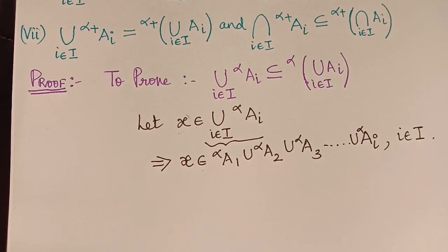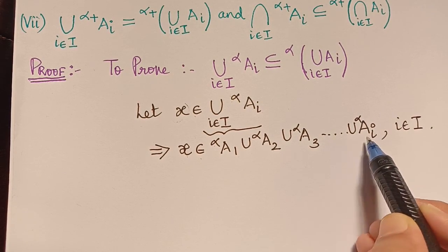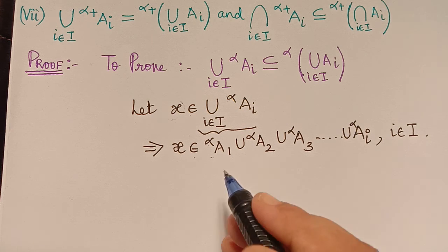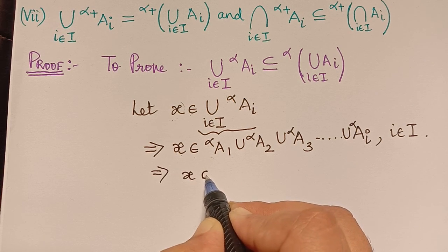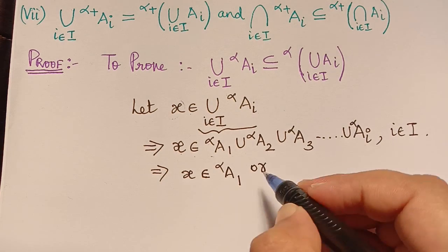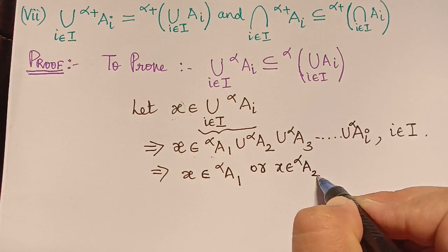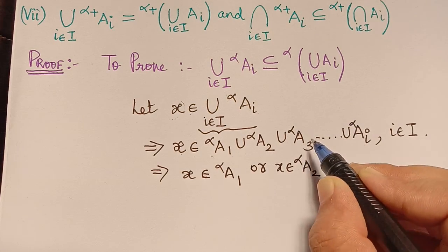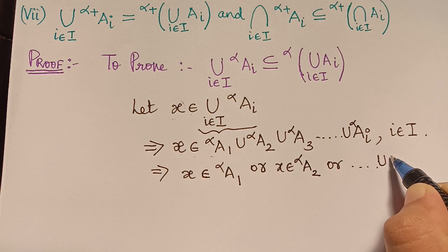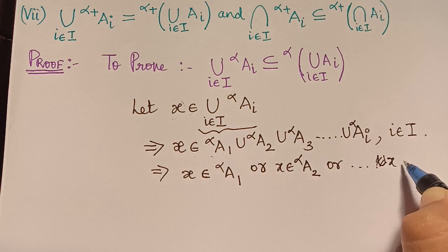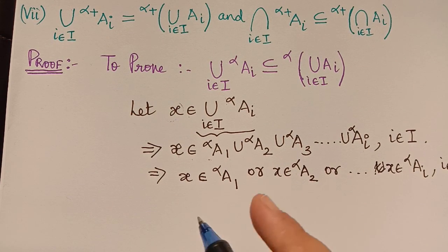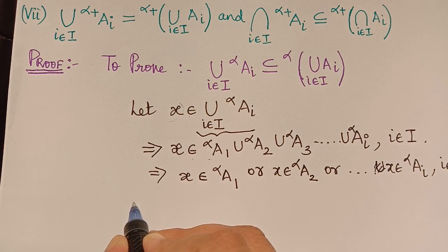Since x belongs to the union of these sets, and each of these sets is a crisp set, by set theory we can say that x is an element of alpha cut of A_1, or x is an element of alpha cut of A_2, or x is an element of alpha cut of A_3, and so on — or x is an element of alpha cut of A_i for some i in capital I.